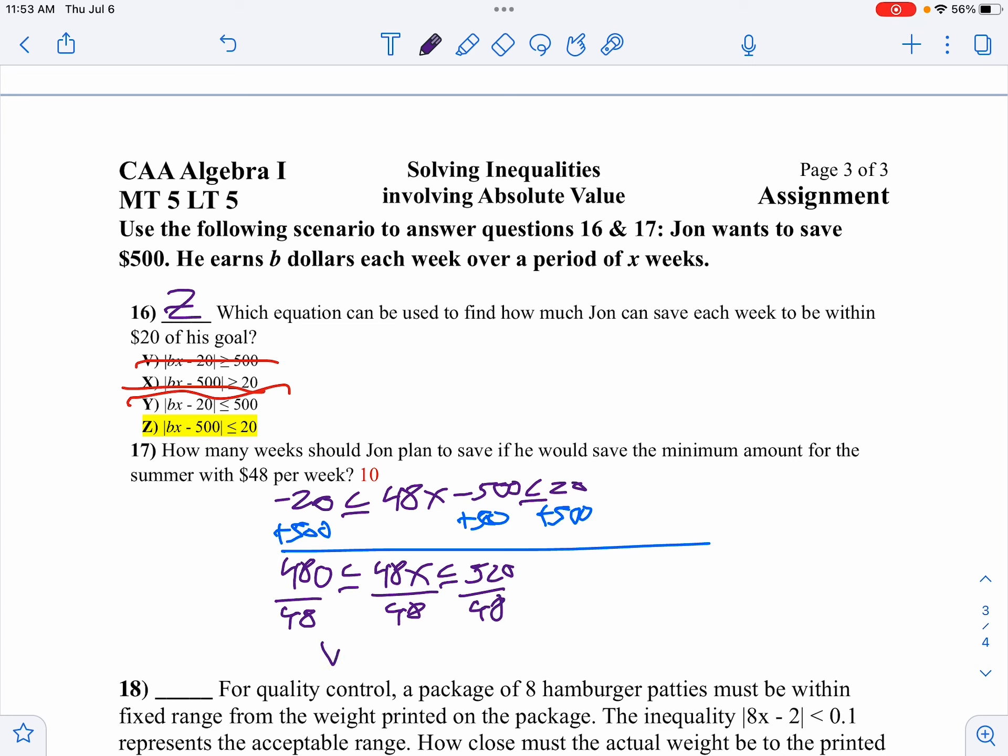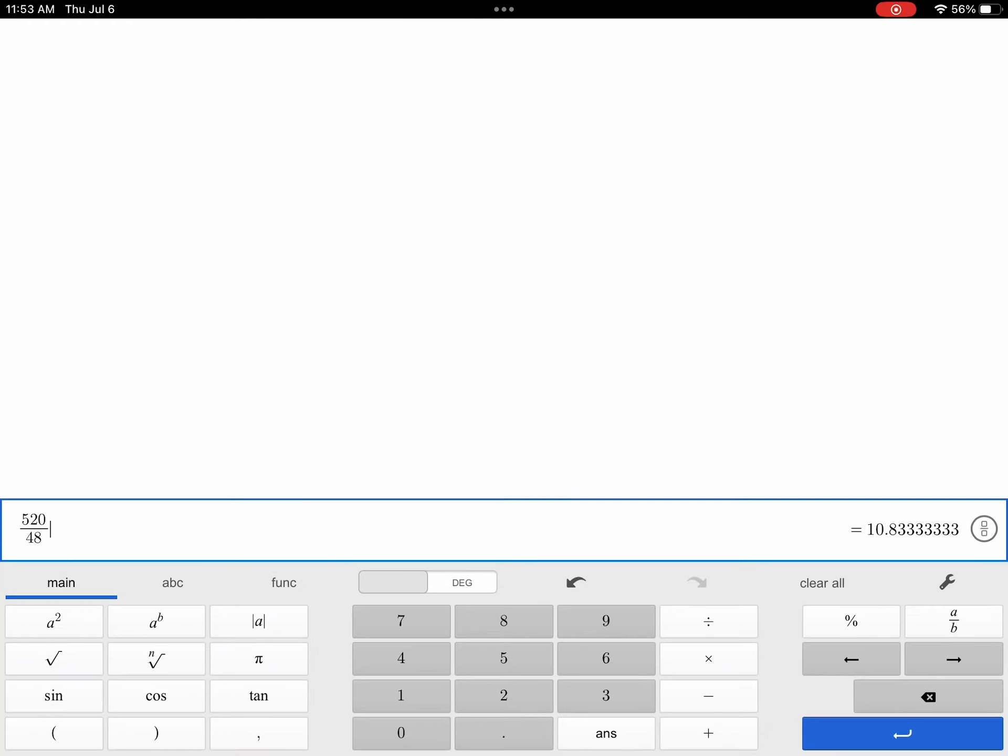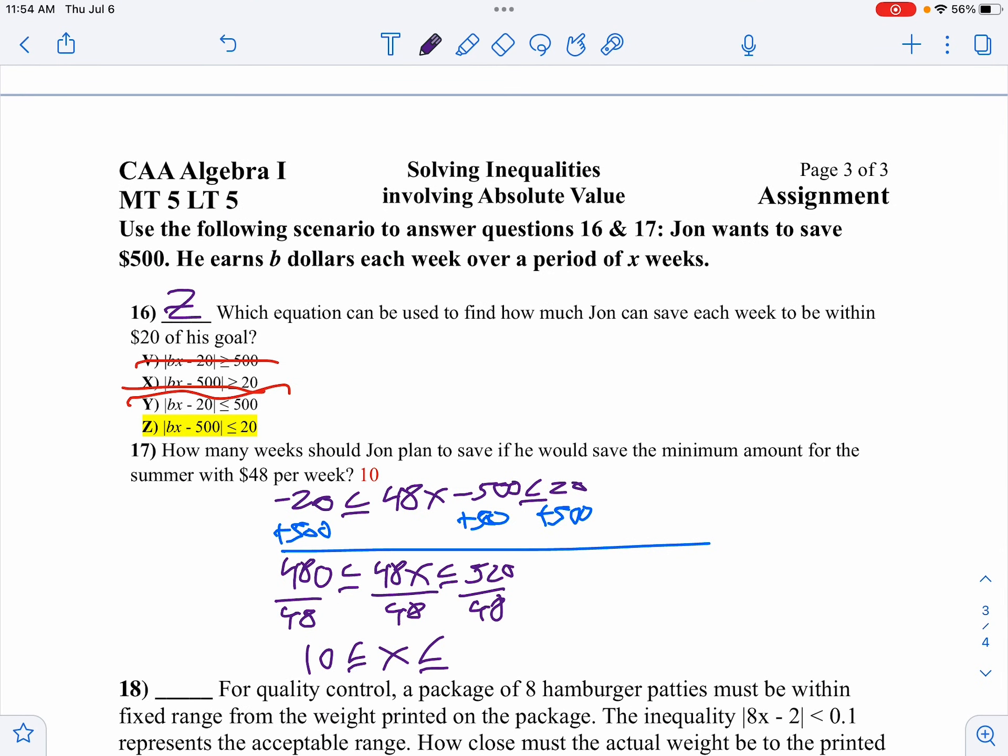So I'll get actually $10 is less than or equal to X, which is less than or equal to $520 divided by $48, which is $10.8. So I want the minimum. Well, what's smaller between $10 and $10.8? Well, $10 is. And that's where we get our answer there.